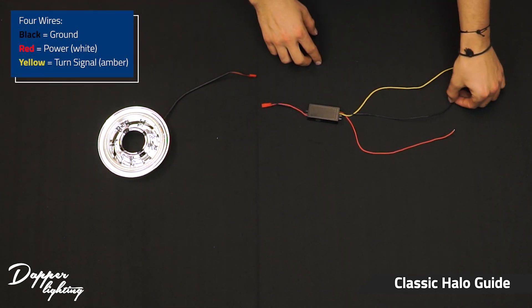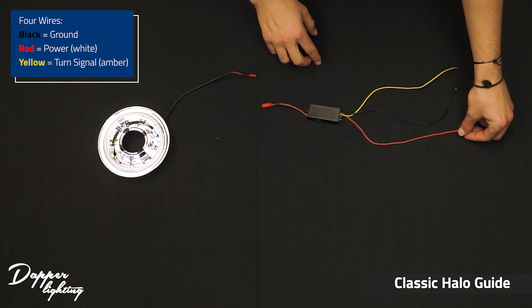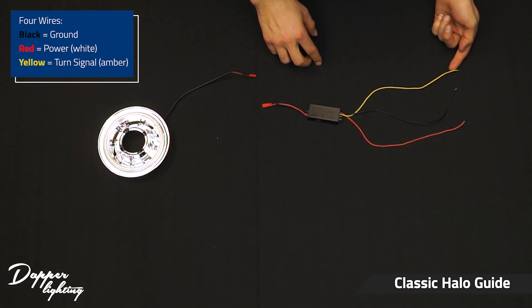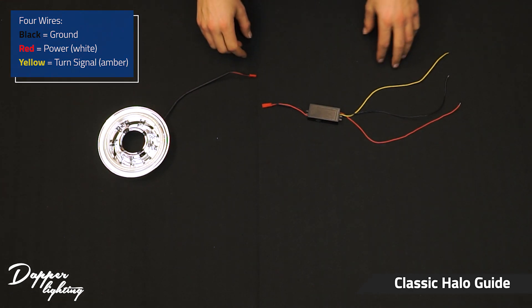It's going to have a black wire for the ground, a red wire for the white halo power, and a yellow wire for the turn signal power. So now we'll get that wired up and we'll show you what it looks like.